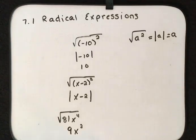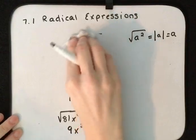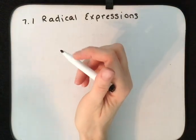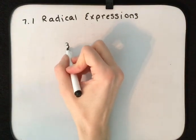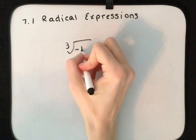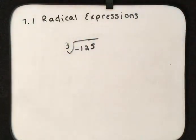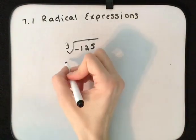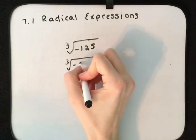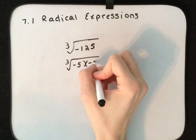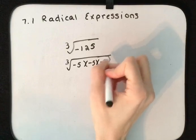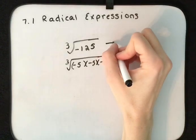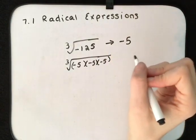Same idea when we look at cube roots. Let's say that we have the cube root of negative 125. We need to figure out what number times itself three times will give us negative 125. If we break down negative 125, it's negative 5 times negative 5 times negative 5. So the cube root of negative 125 is negative 5.